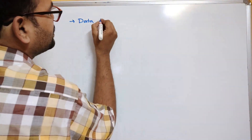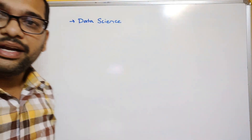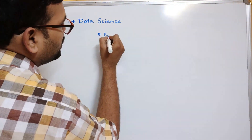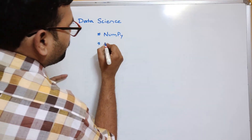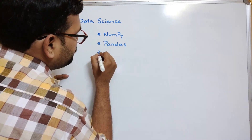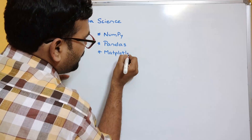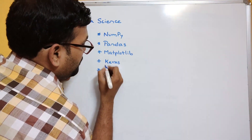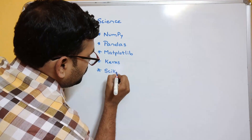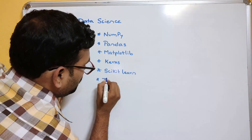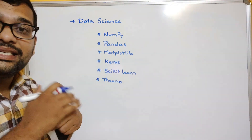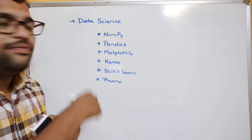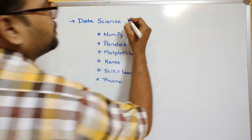For data science — large datasets, analysis, and manipulation — the major libraries are: NumPy, pandas, matplotlib, Keras, scikit-learn, and Theano. These are the commonly used data science libraries for data analysis and manipulation.